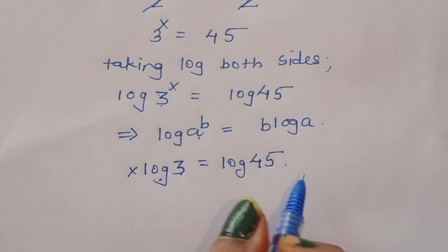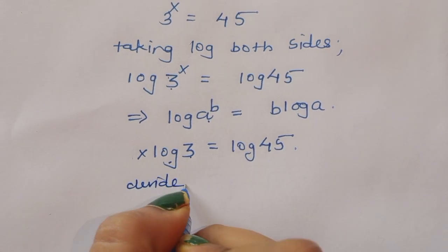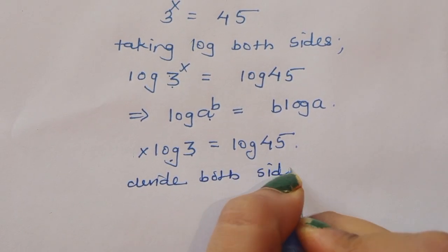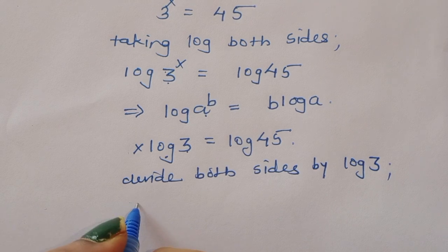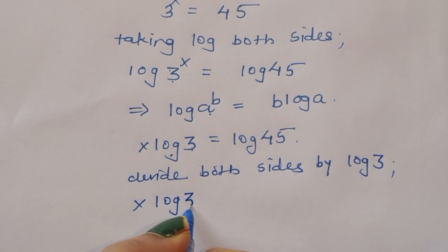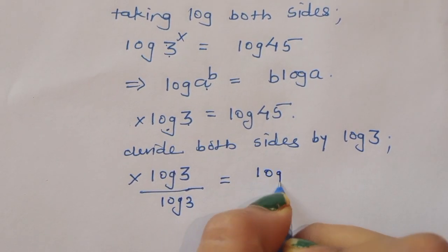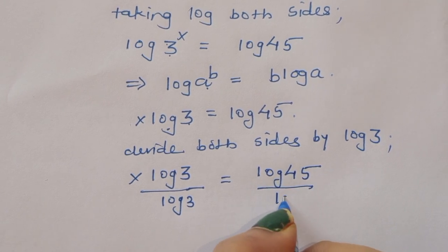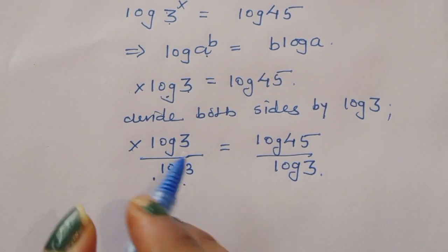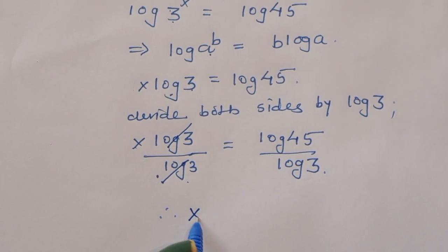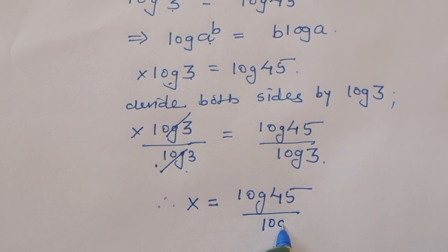Now we divide both sides by log of 3, because we need to find the value of x. Then x times log of 3 divided by log of 3 is equal to log of 45 divided by log of 3. The log of 3 cancels, so x is equal to log of 45 divided by log of 3.